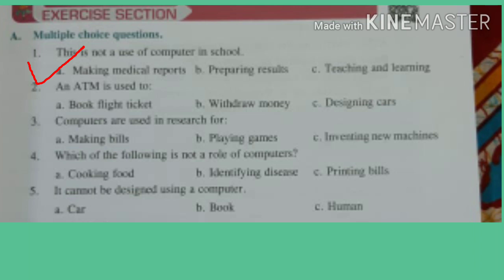Number 2: An ATM is used to book flight ticket, withdraw money, or designing cars. You must have visited ATMs with your parents and you know what is the use of ATM. We always go there to withdraw money. So the right answer will be number B, withdraw money.